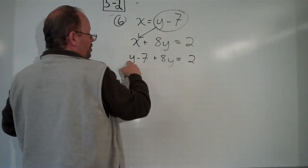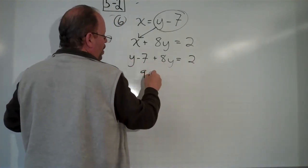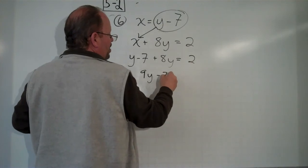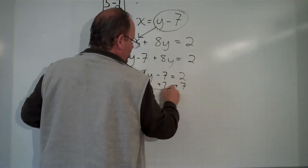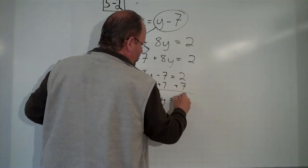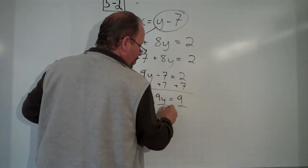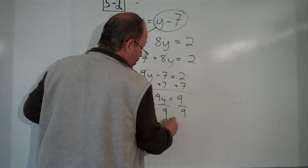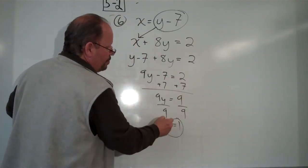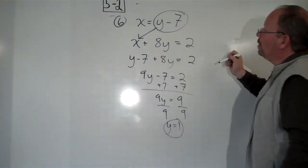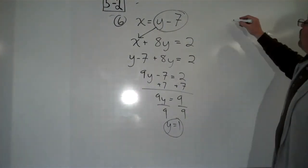Now we combine our like terms. 9y minus 7 equals 2. We add 7 to both sides. 9y equals 9. Divide both sides by 9. Use your pause and rewind if I'm going too fast. y equals 1.